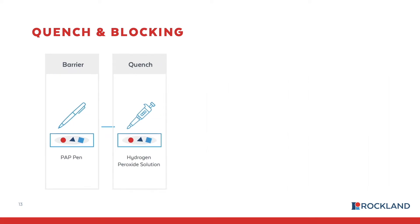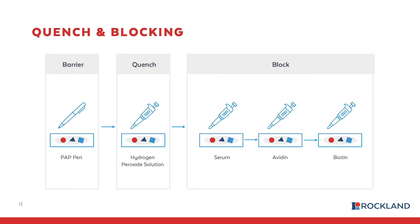Now that we've talked about antigen retrieval, that brings us to the next step in the IHC workflow: the quench and blocking steps. These steps are performed to prevent non-specific binding of different components, including endogenous enzymes like peroxidase and phosphatase, or other proteins within the tissue that can react with detection reagents used for staining. Since the reagents from this step onward are directly applied to tissues on individual slides, something called a PAP pen is used to create a hydrophobic barrier around the tissue to keep the reagents specifically on the tissue area.